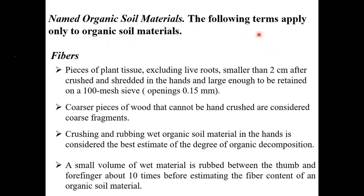Now we see organic soil fractions. Organic material mostly involves fibers - excluding live roots, which are not considered soil material. The fibers should be smaller than two centimeters after crushing with hands, and those materials should be retained in a 100-mesh sieve with 0.15 mm opening. Coarse wood that cannot be crushed by hand also qualifies. The small volume of wet material is rubbed between thumb and fourth finger 10 times to estimate fiber content.